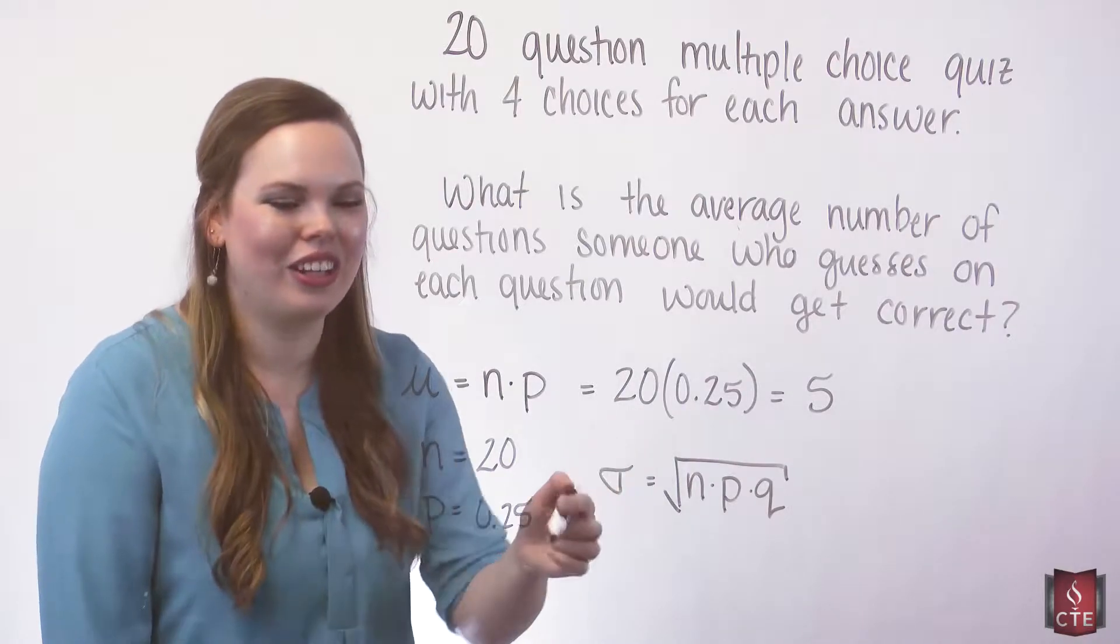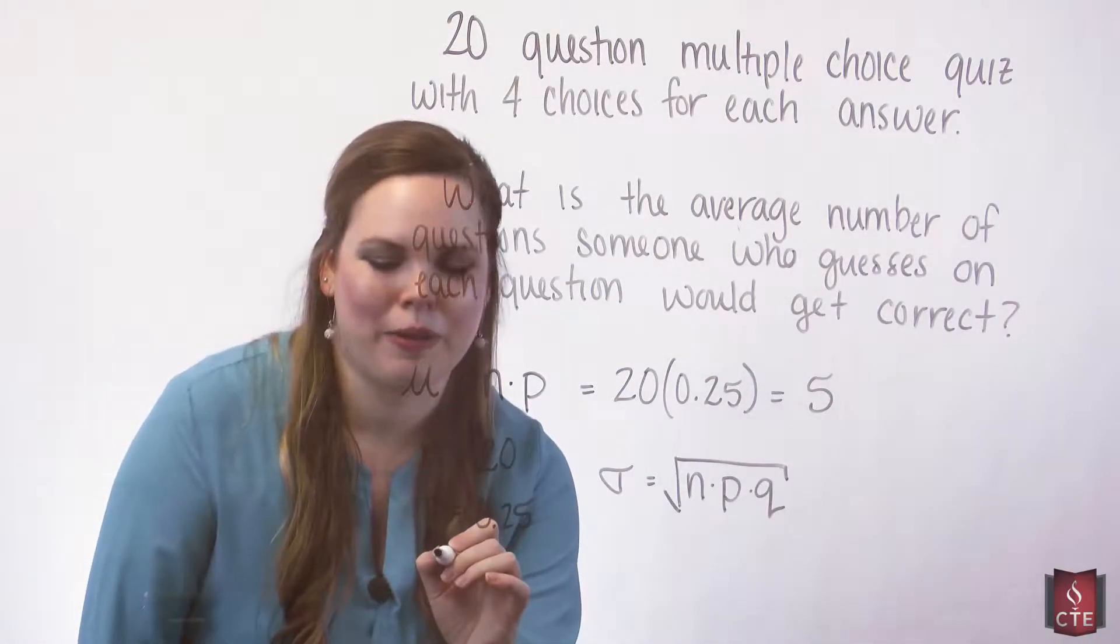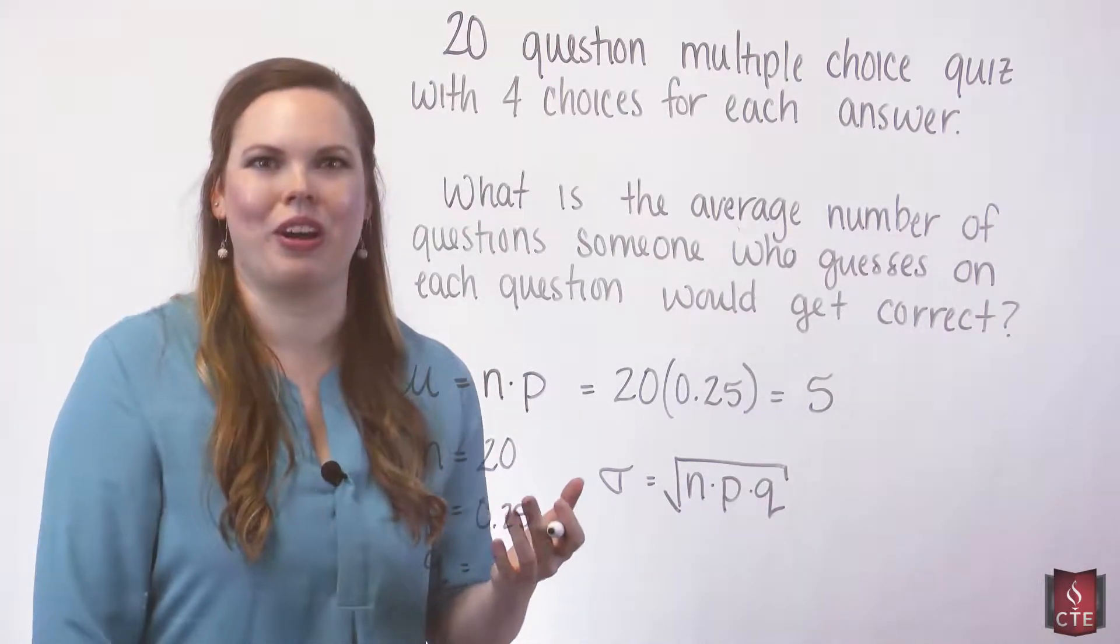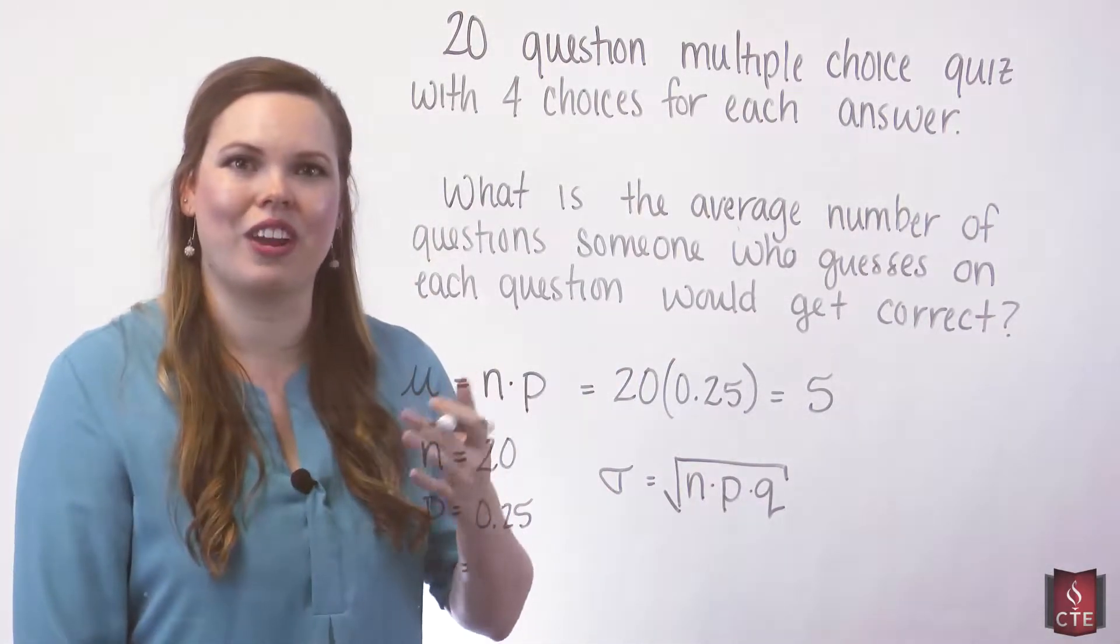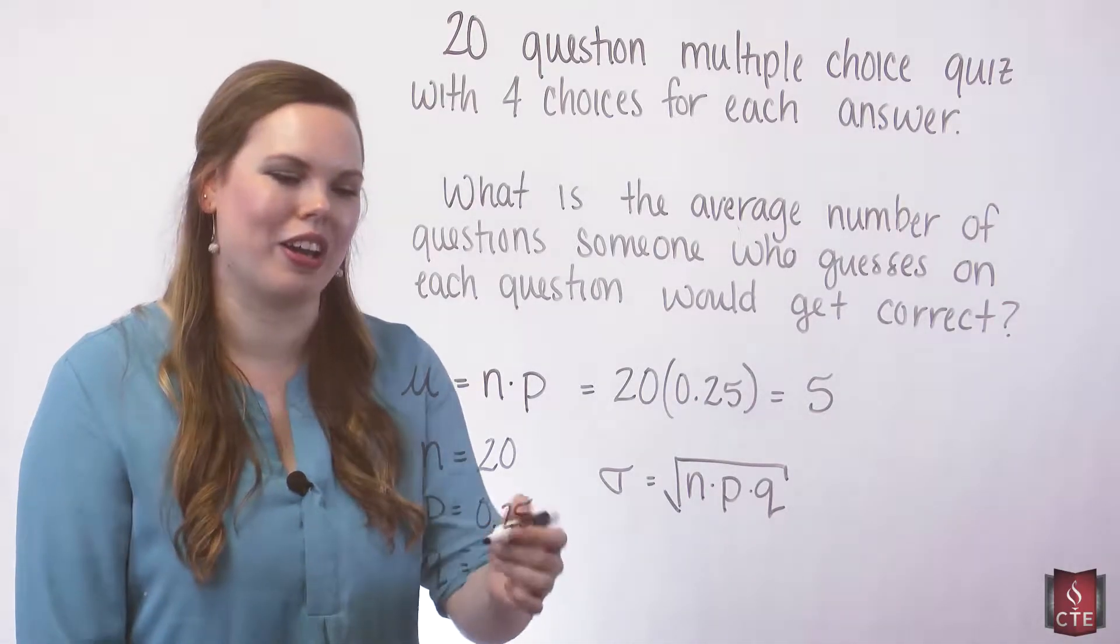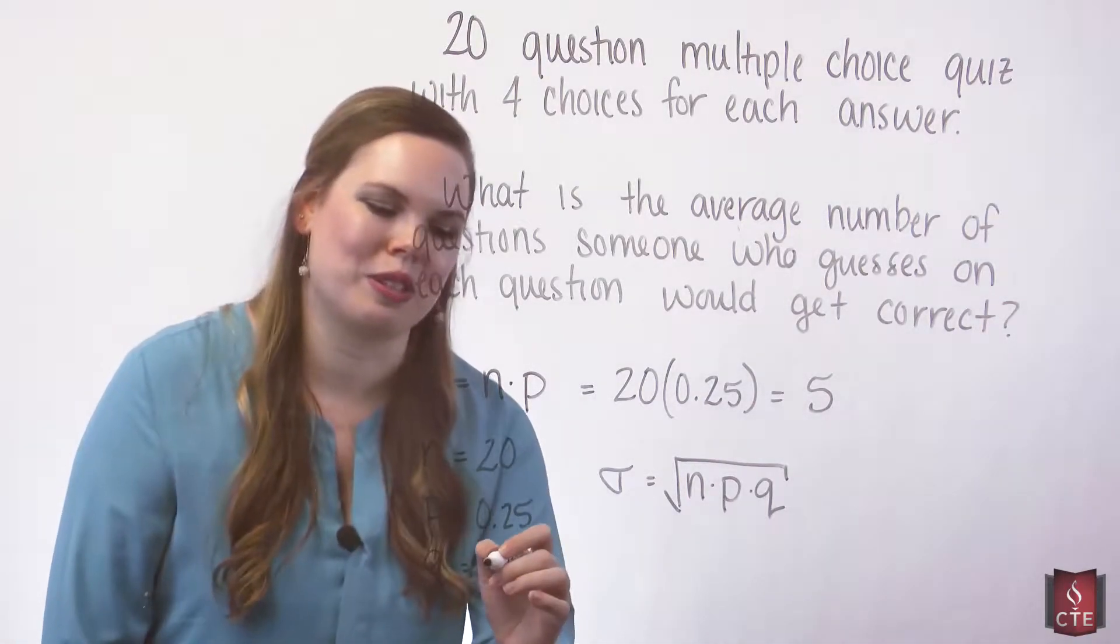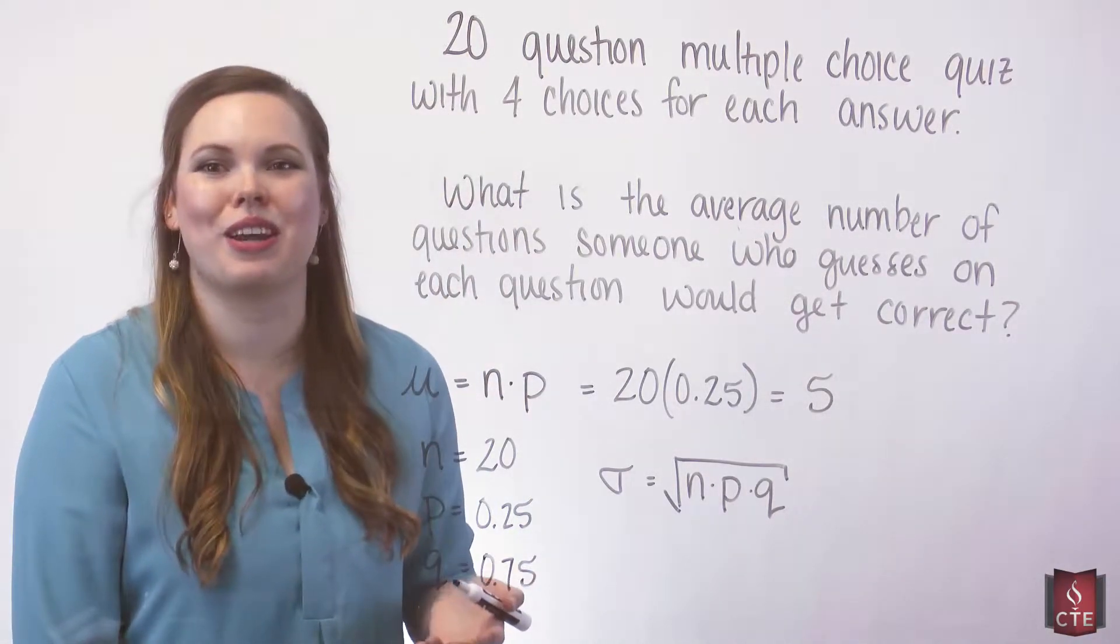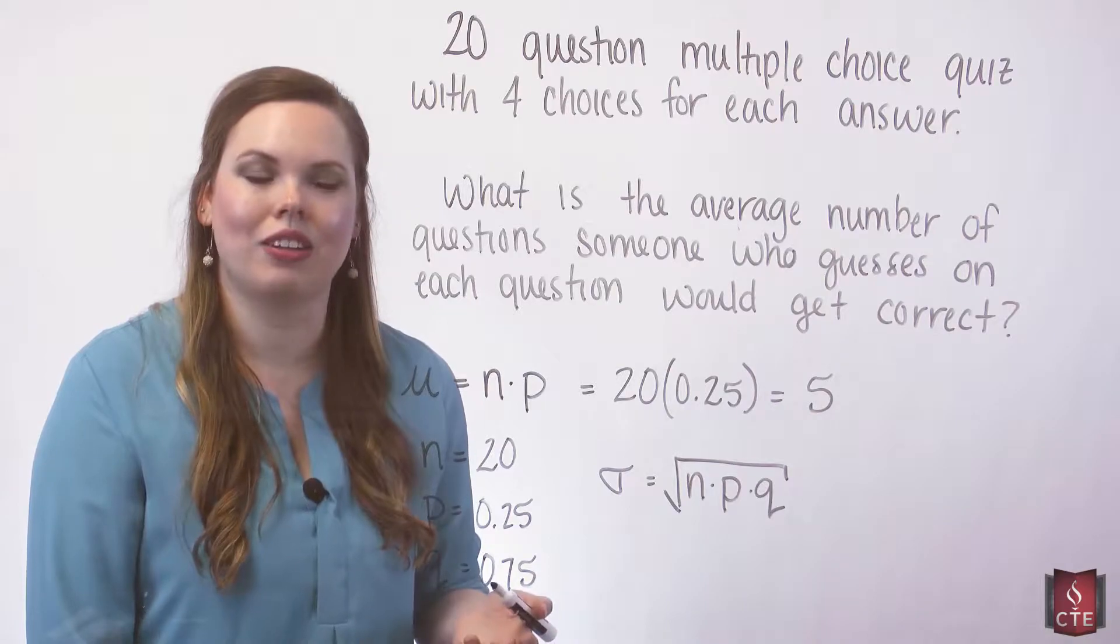So we need q. It's the probability of a failure, and we always know that p and q should add to 1. You're either going to succeed or you're going to fail, so they're a complement. So our q is going to be 1 minus 0.25, which of course is 0.75. Three questions out of the four that are going to be incorrect.